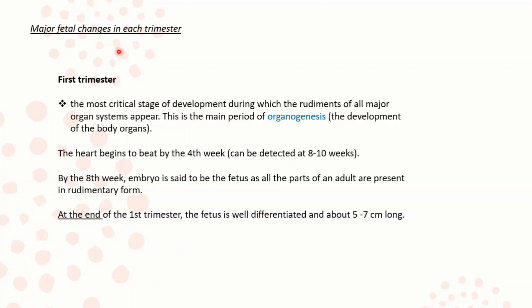Major fetal changes in each trimester. In the first trimester, this is the most critical stage of development during which the rudiments of all major organ systems appear. This is the main period of organogenesis — the development of the body organs. The heart begins to beat by the fourth week, and by the eighth week the embryo is referred to as the fetus, as all the parts of an adult are present in rudimentary form. At the end of the first trimester, the fetus is well differentiated and about 5 to 7 cm long.